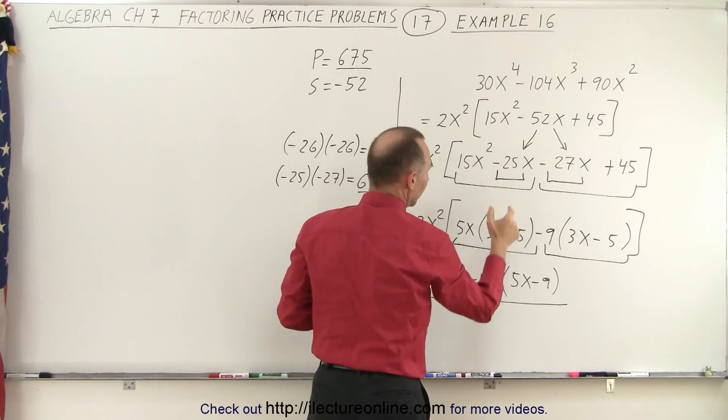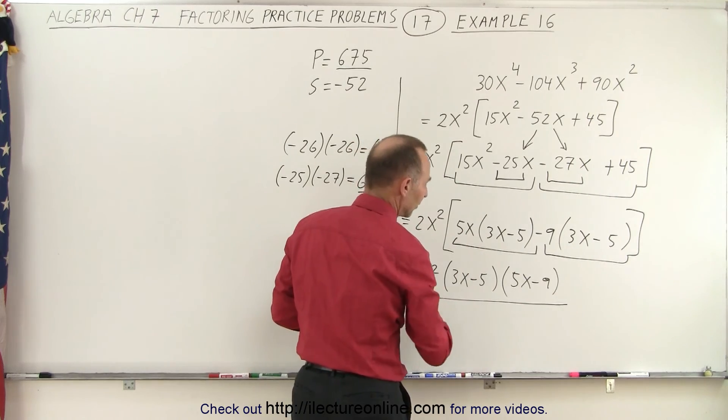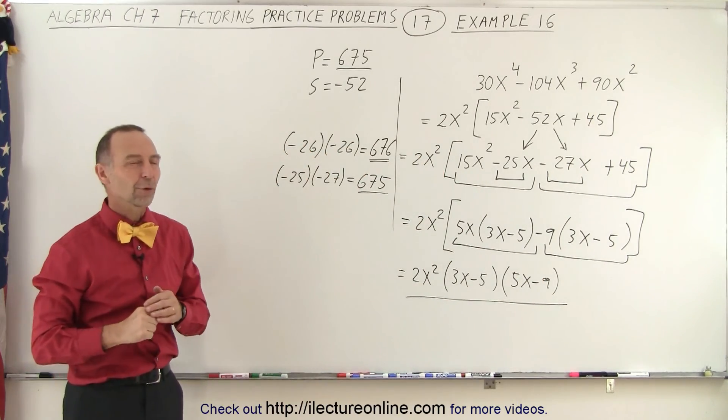You plug those two numbers in here. You then group them in groups of two. You factor out a common factor. And that's how you end up with the factored form.